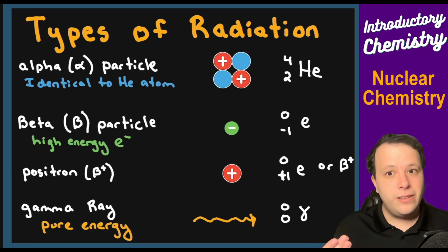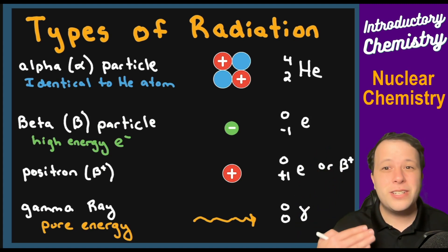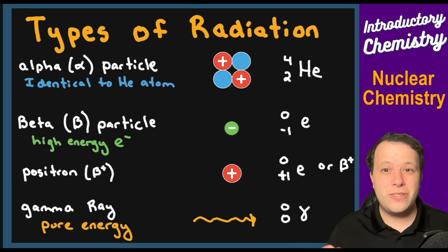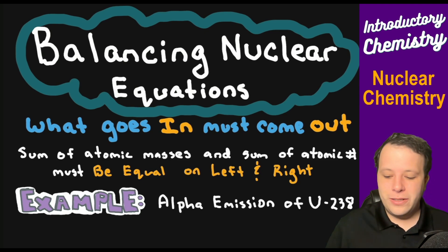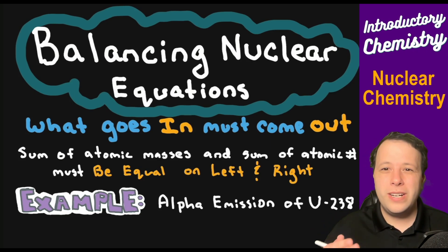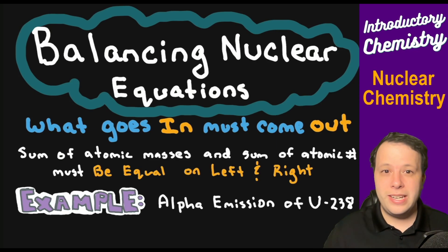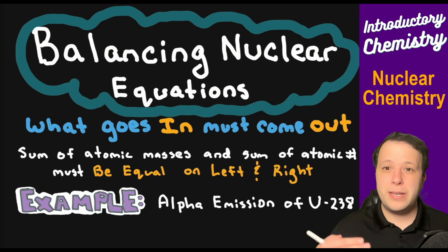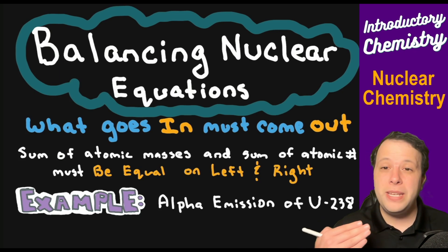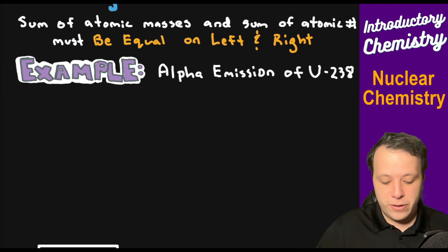Now we're going to learn how to balance nuclear equations. We'll go through the steps and review some tips as we work through an example for each type. These are really important reactions for people in radiation technology or anyone interested in the medical field or basic chemistry. With balancing nuclear equations, the big idea is what goes in must come out — the law of mass conservation. What's on the left side in the reactants must be the same as the right side in the products. All we're doing is adding up the sum of the atomic masses and atomic numbers — they must be equal on the left and right. Make sure you have your periodic tables ready.